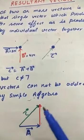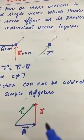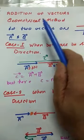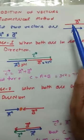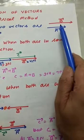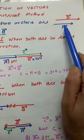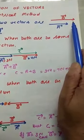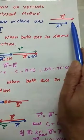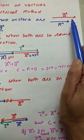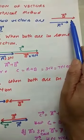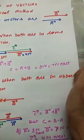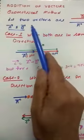So what are the simple rules for addition of vectors? We will discuss the geometrical method. Suppose vector A is 3 Newton and vector B is 4 Newton, and both vectors are acting on the body in the same direction. If two students push a body in the same direction, naturally the body displaces in that same direction.